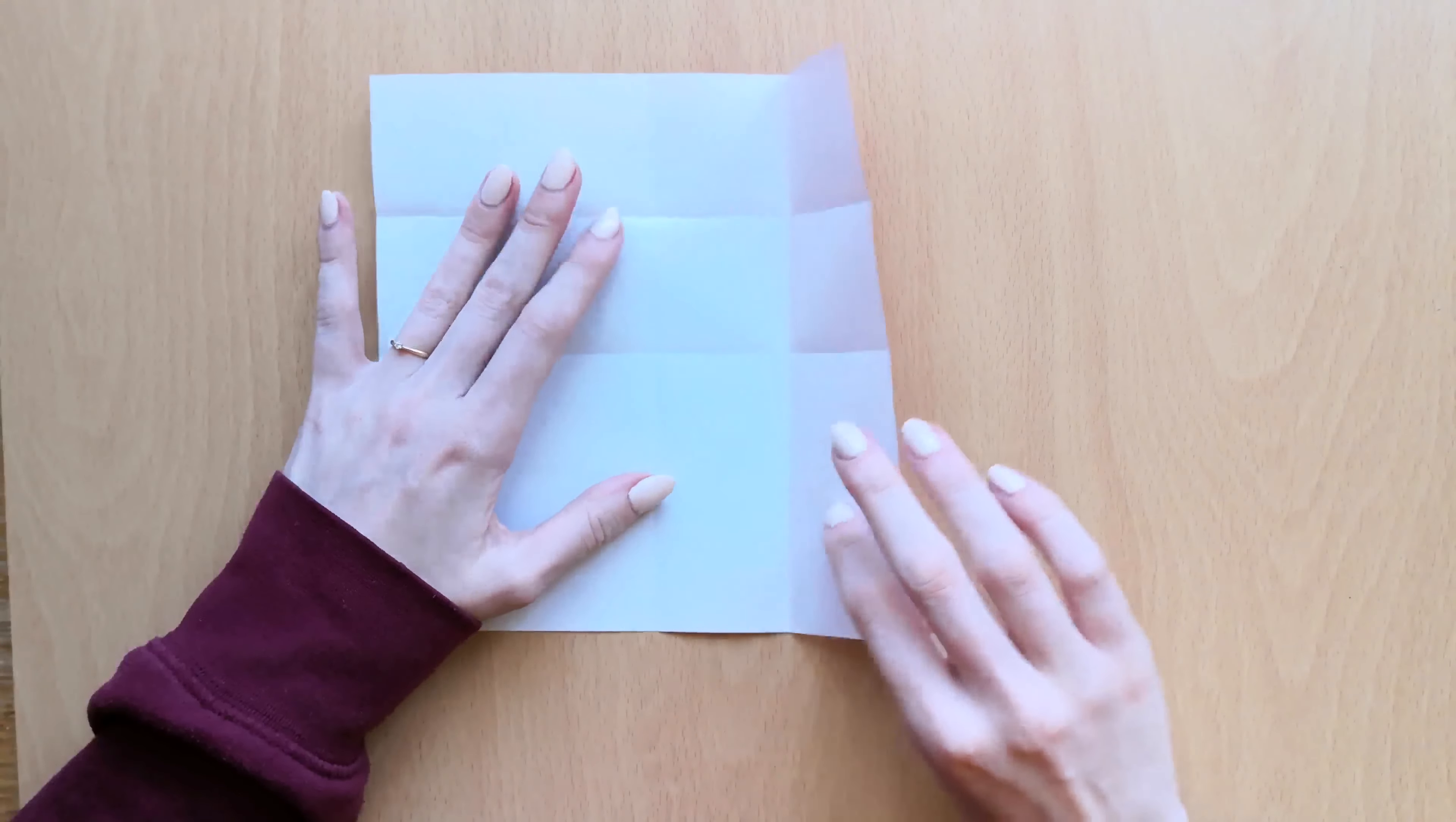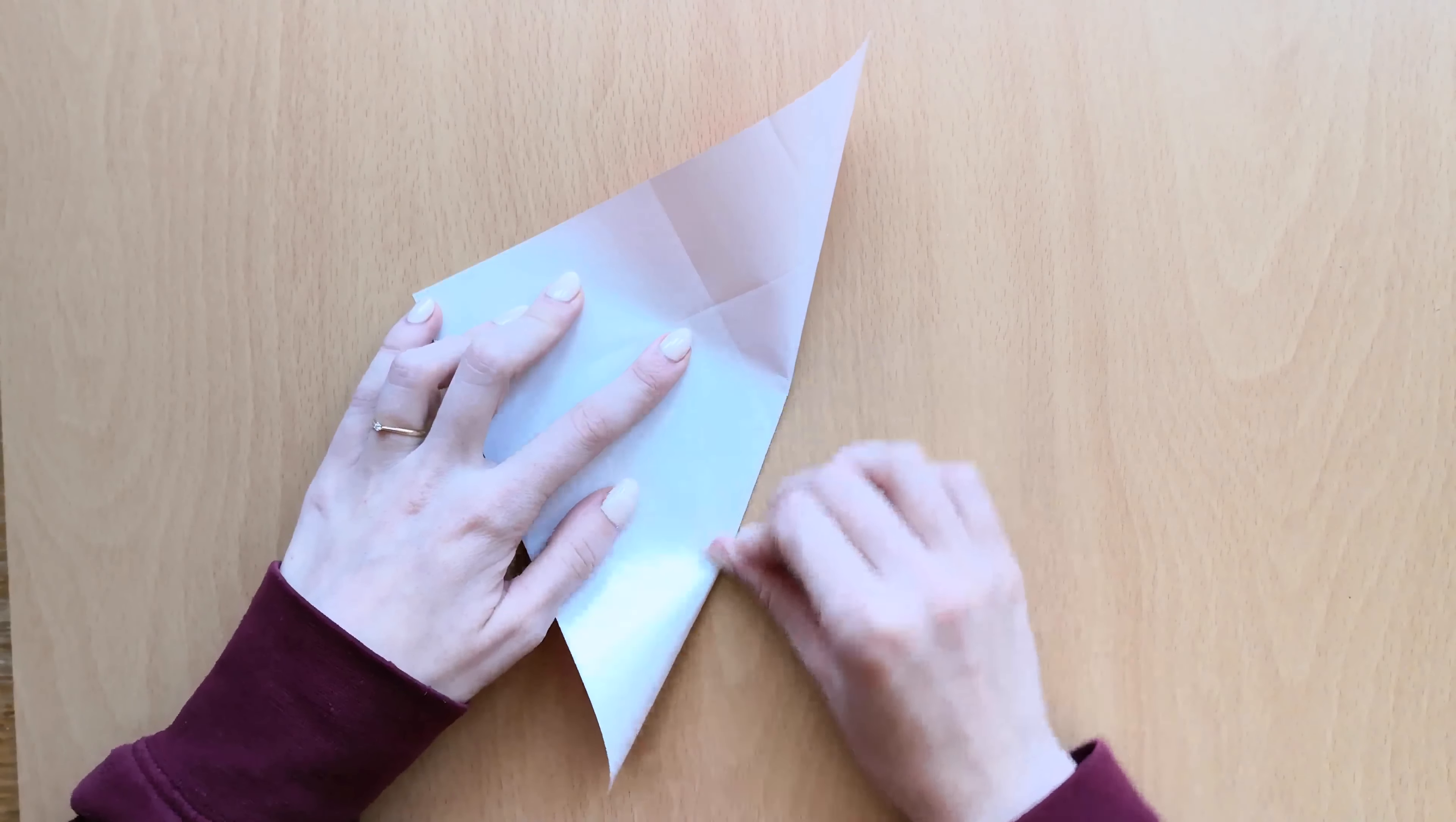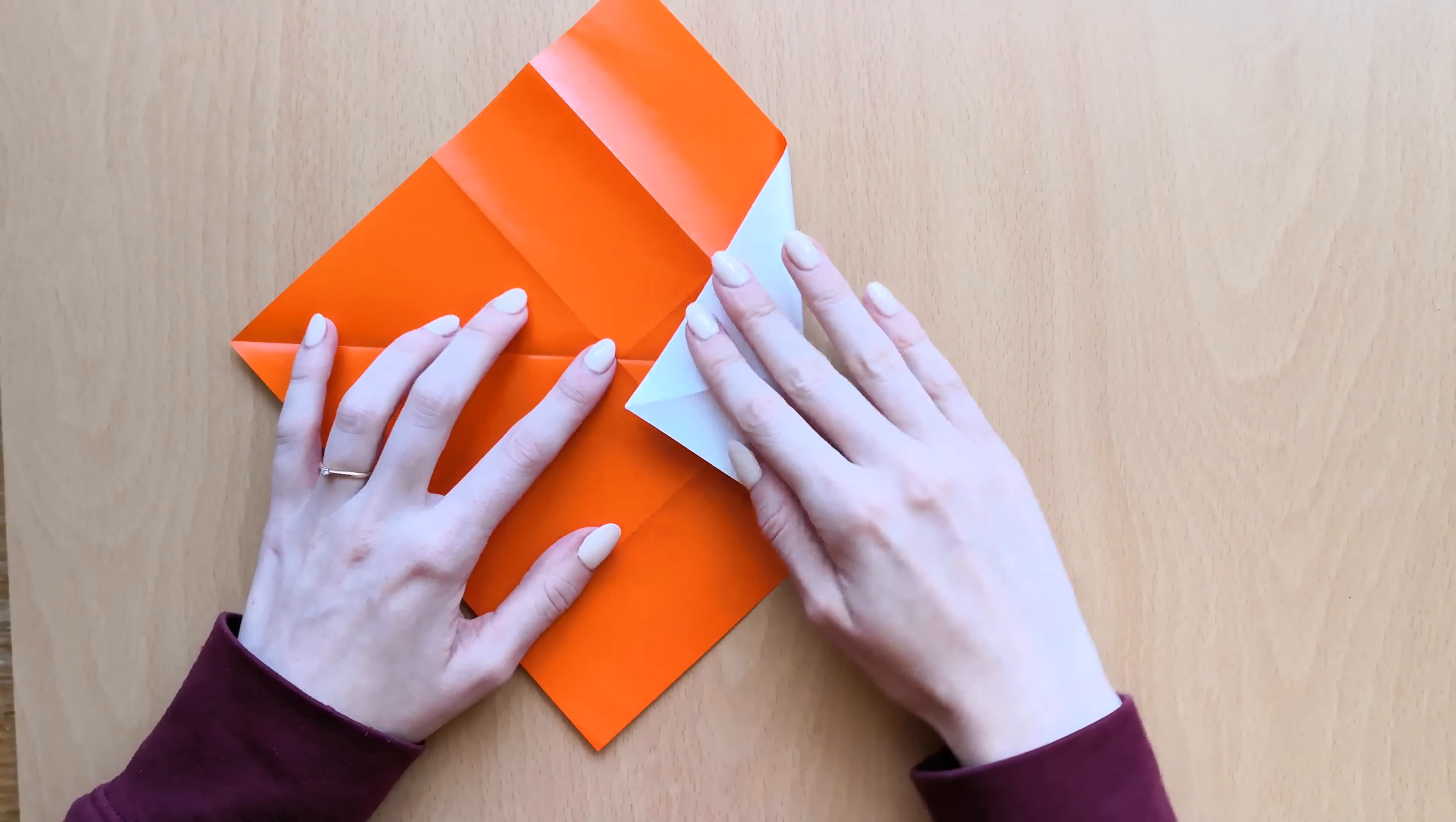In the next step we'll turn our paper around and we'll fold it on the diagonal. We'll open it and we will leave the color side up and we'll bring this point here to the middle point and we'll fold a triangle.